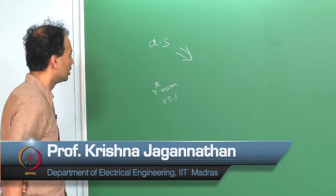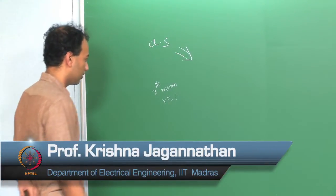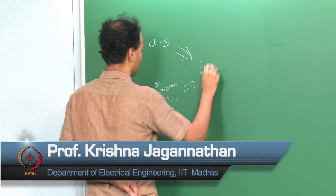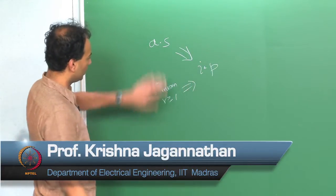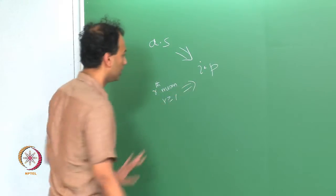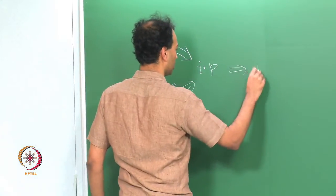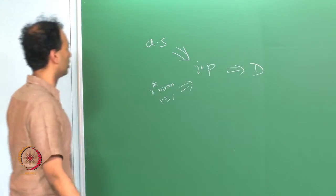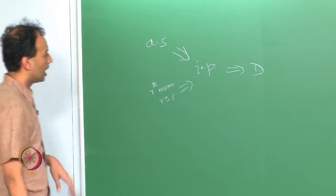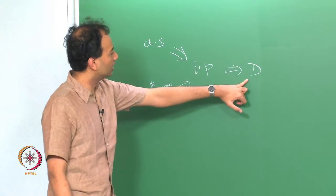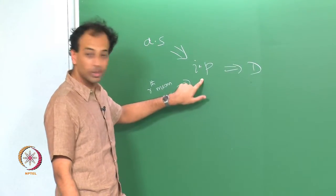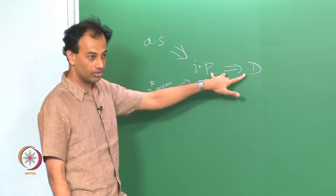We were dealing with the hierarchy of convergence concepts. We said convergence almost surely and convergence in the r-th mean implies convergence in probability, and convergence in probability implies convergence in distribution. Between these two, the converse is not true, but if the limit is a constant then they are equivalent.